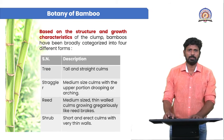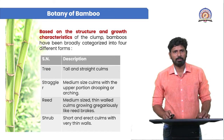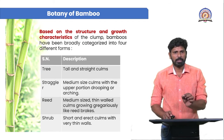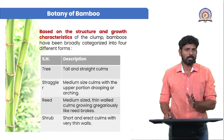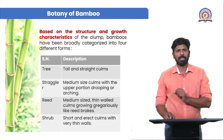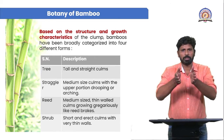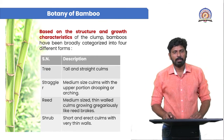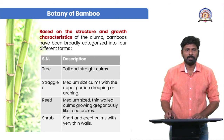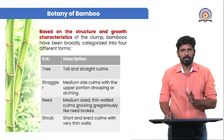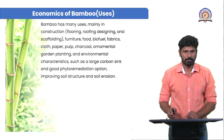Based on structure and growth characteristics of the clump, bamboo has been broadly categorized into four forms: tree, straggler, reed, and shrub. Tree forms are tall and straight clumps. Straggler forms are medium-sized clumps with the upper portion drooping or arching. Reed forms are medium-sized thin-walled clumps growing gregariously like a reed brick. Shrub forms are short and erect clumps with a very thin wall.